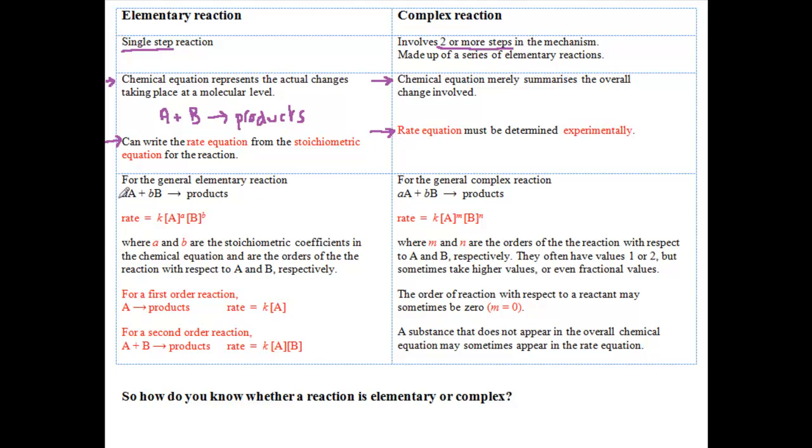For the general elementary reaction shown here, the rate equation takes this form, where small a and small b are the stoichiometric coefficients in the chemical equation and are the orders of the reaction with respect to A and B respectively.